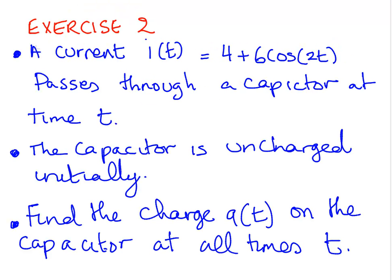Another one. A current i of t is equal to 4 plus 6 cos 2t, pass through a capacitor at time t. The capacitor is uncharged initially. Find the charge q(t) on the capacitor at all times t.